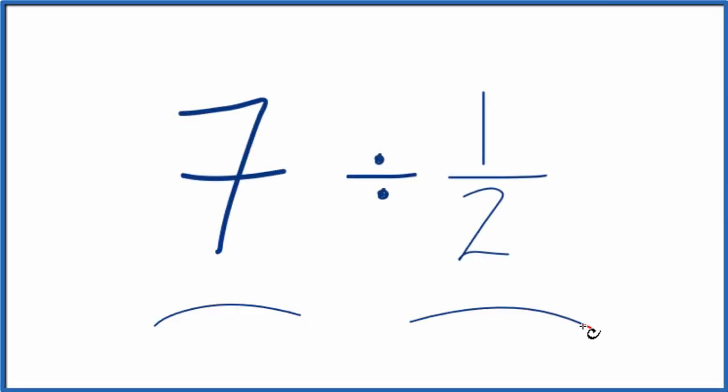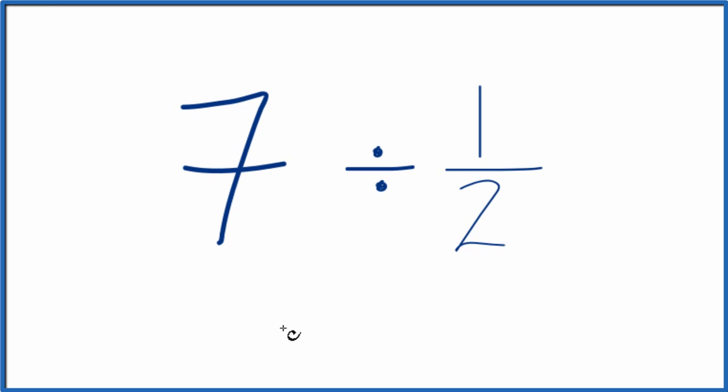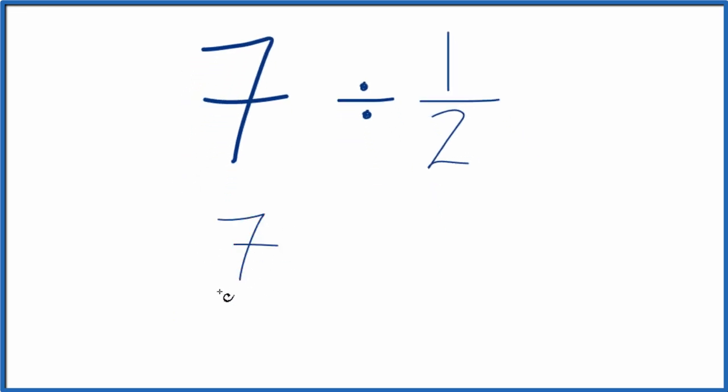Let's divide 7 by 1 half, and here's how we'll do it. Let's call this 7 over 1. It's still 7, we're just dividing by 1, but now we have a fraction that's going to be easier to work with.